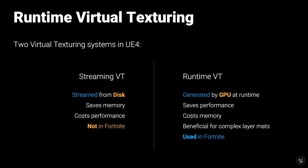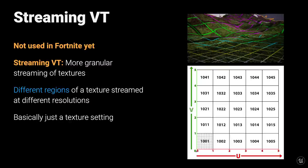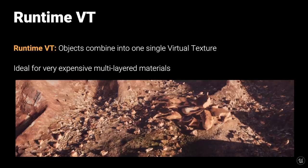The runtime VT is now used in Fortnite as of Chapter 2. The streaming VT is basically a way to have more granular streaming of large textures — different regions of one texture can be streamed in at different resolutions, essentially just a texture setting without workflow changes. The runtime VT, on the other hand, allows different objects including both static meshes and terrain to combine into one single virtual texture. This is ideal for very expensive multi-layered materials or where custom blend effects are needed.